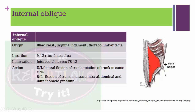Internal oblique muscle: originates from the iliac crest, inguinal ligament, and thoracolumbar fascia, and inserts into ribs 9 to 12 and the linea alba. Innervated by intercostal nerves T8 to L2. If working unilaterally: trunk flexion and same-side rotation. If working bilaterally: trunk flexion and increased intra-abdominal and intrathoracic pressure.